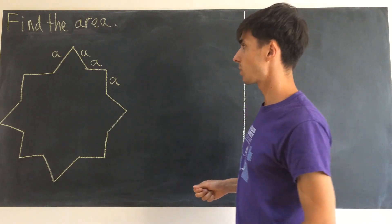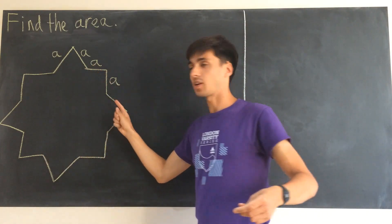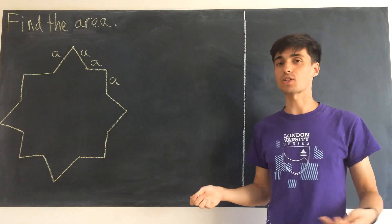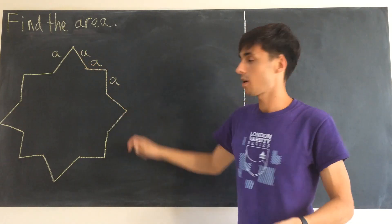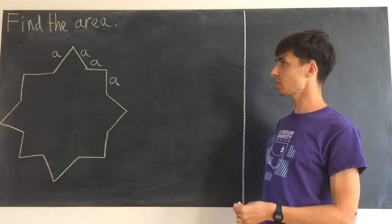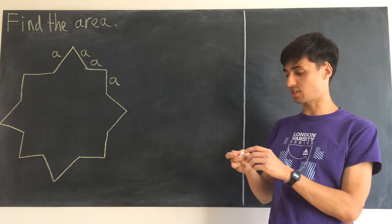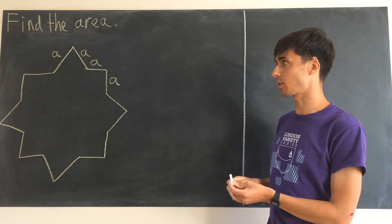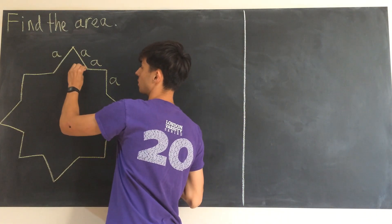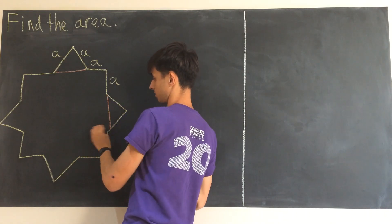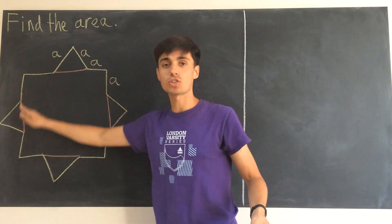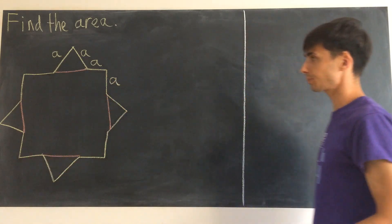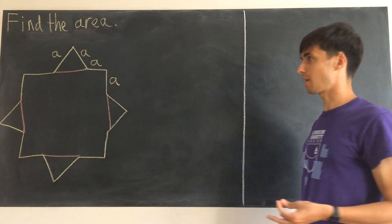In this question we would like to find the area of a star shape made by octagons, where all sides have length a. To find the area, we're going to split this shape up into four triangles on the outside and a larger square in the middle.